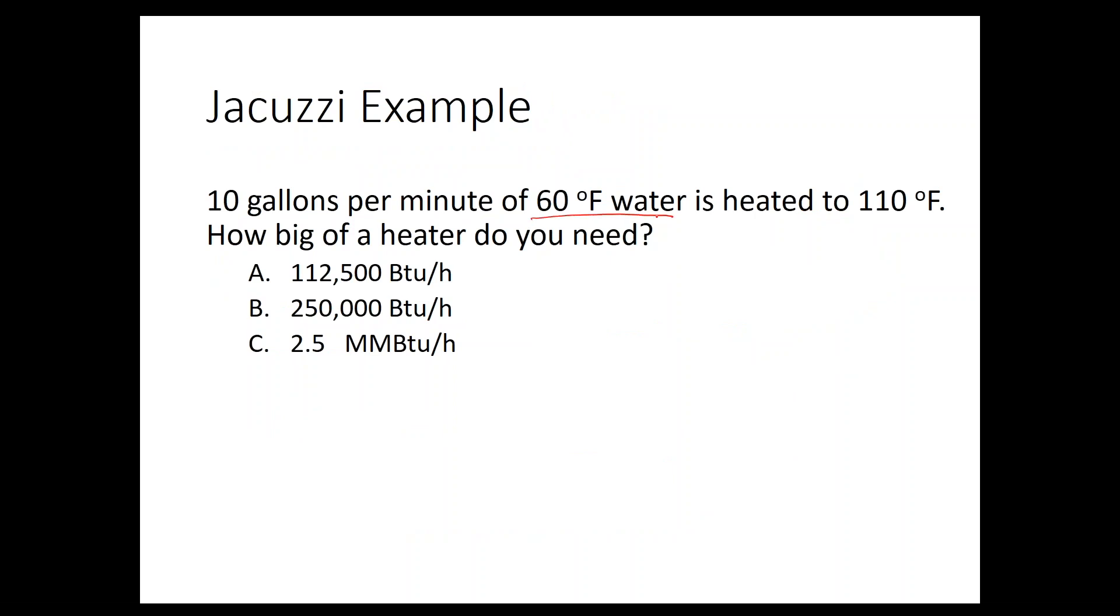I like to apply this equation into what I call a jacuzzi example. Say you've got 60 degree water coming from the ground, and you want to heat that to 110 degrees. Say you want a flow rate of 10 gallons per minute. So the question is, how big of a heater do you need? If you've done this before, pause the recording. If not, let's do the equation. Q equals 500 GPM times delta T. If you multiply all these things together, you get 250,000 BTUs per hour.